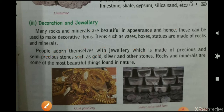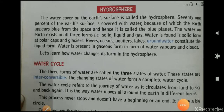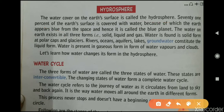The water cover of the Earth's surface is called the hydrosphere. 71% of the Earth's surface is covered with water, which is why Earth appears blue from space and is called the blue planet.